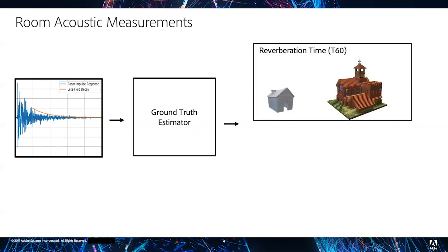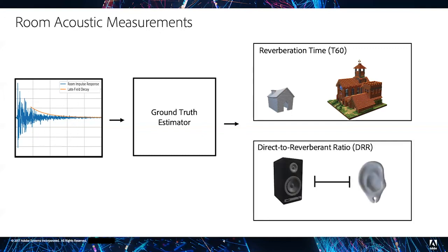Two physical properties of interest include the reverberation time denoted as T60, which is defined as the time it takes an impulsive sound to decay within a room by 60 decibels, and the direct-to-reverberant ratio or DRR, which is the ratio of direct sound to reverberant sound in a room.